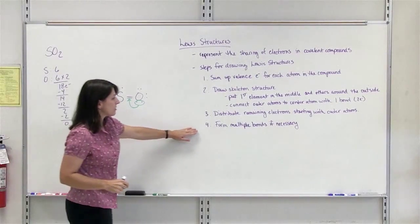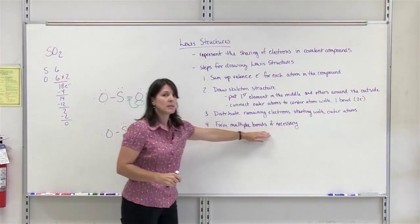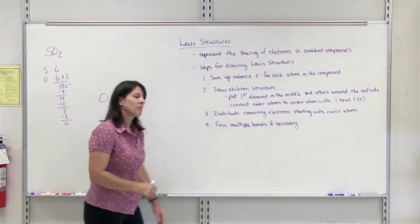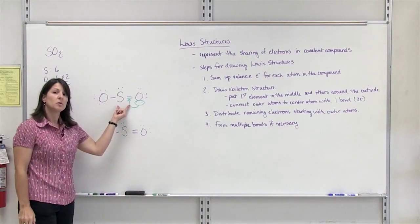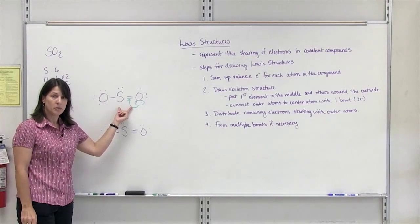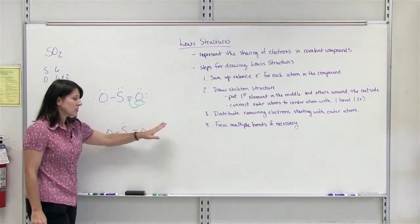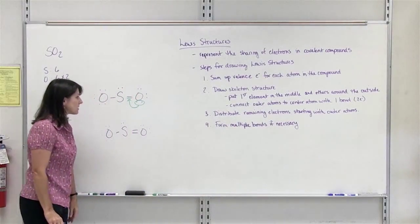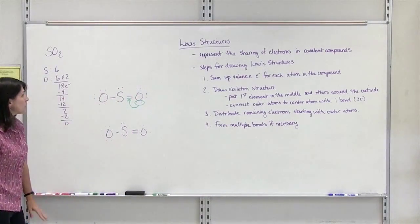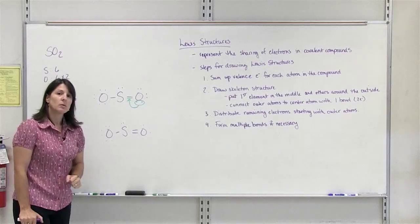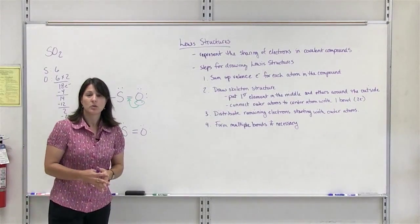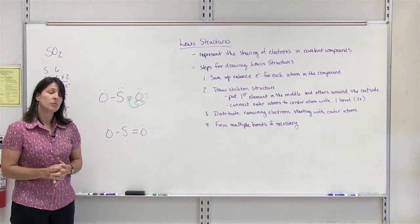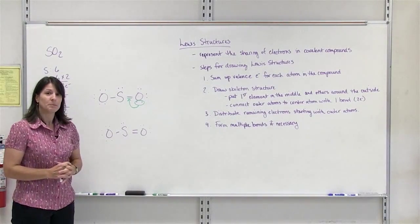The key point here is that forming multiple bonds only happens if the center atom does not have its full octet after step 3 — it is always a last resort. With those 3 examples, you should have a pretty good understanding of how to draw a Lewis structure for any type of covalent compound.